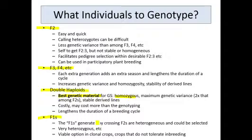You can also do genomic selection based on F1s. In the rapid cycling scheme shown previously, what we call F1s is actually a heterogeneous population generated by crossing F2s. Those plants could be genotyped, their value predicted, and the best ones picked for either selfing or crossing amongst themselves. And of course, in some crops — particularly clonal crops and crops that do not tolerate inbreeding — the F1s are always a heterogeneous population and you can do selection amongst them.